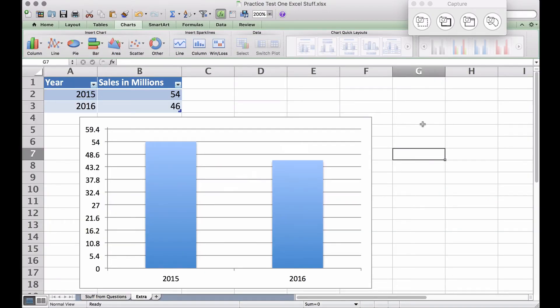As an added bonus, I've put a visual bar graph up here. Two pieces: 2015 we have the height of this bar at $54 million, which matches what we had in our problem, and in 2016 we have the $46 million.